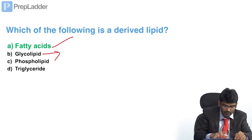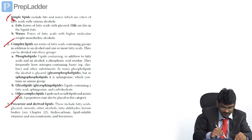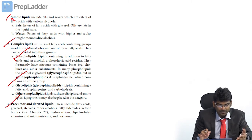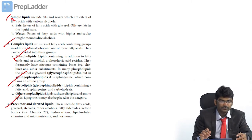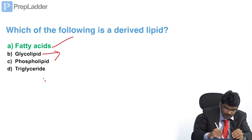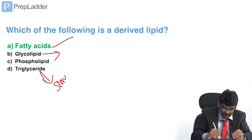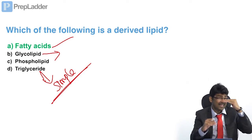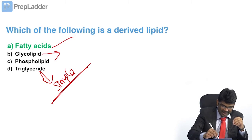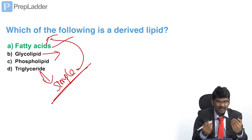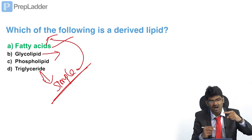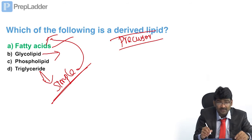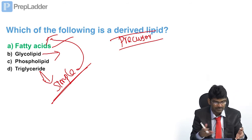What about glycolipid? Glycolipid is a complex lipid. Phospholipid, glycolipid, and sulfolipid are all complex lipids. Triglycerides are simple lipids. Do not think that fatty acids are the simple lipids. Triglycerides are simple lipids, and on hydrolysis they produce fatty acids, which are derived or precursor lipids. As this is given in Harper, they can ask you simply this question.